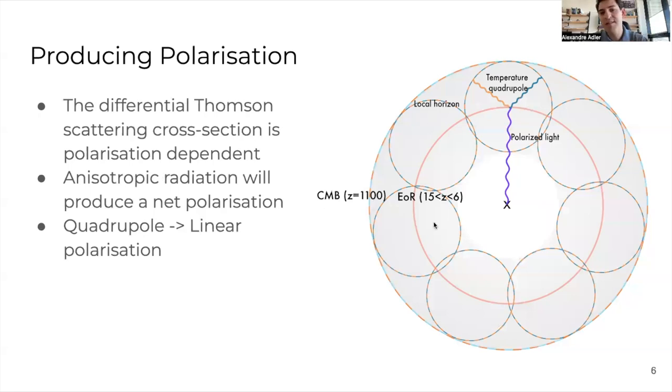However, as it reionizes from z of 15 to redshift 6, suddenly you start having quite a few free electrons floating around. Since there are so many CMB photons, inevitably some of them will hit those electrons and get scattered. The Thomson scattering cross-section is polarization dependent. If you have a local quadrupole of CMB photons for a given electron, it will emit net polarized radiation, especially linear polarization, which is what we see in the CMB Q and U maps.